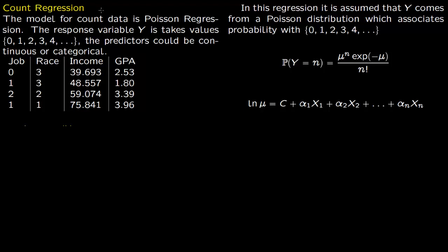In this lecture, we talk about count regression models. In count regression models, the response variable takes on values 0, 1, 2, 3, 4 and so on — the values are some kind of a count. The model for count data is Poisson regression, which we will discuss in this lecture.